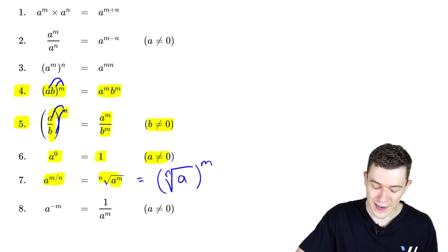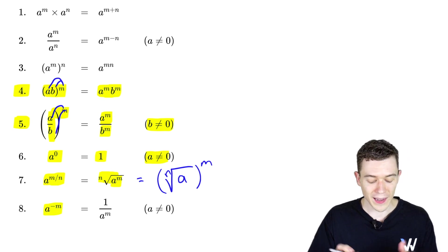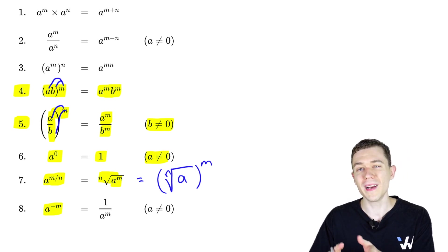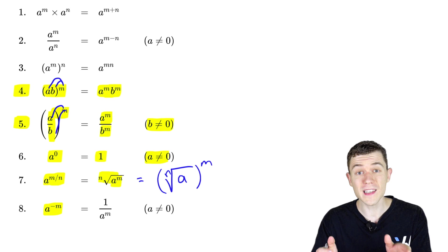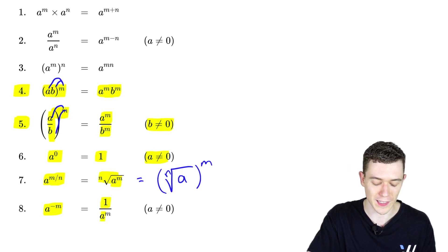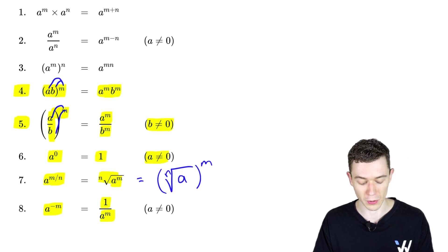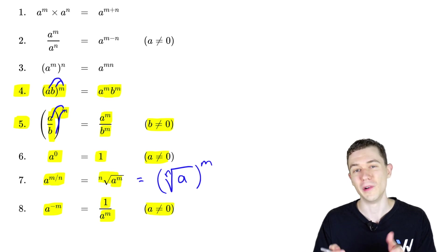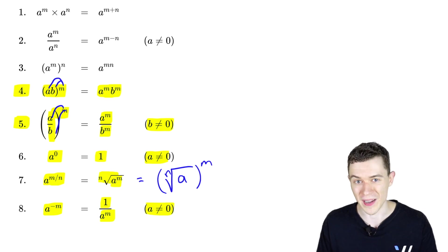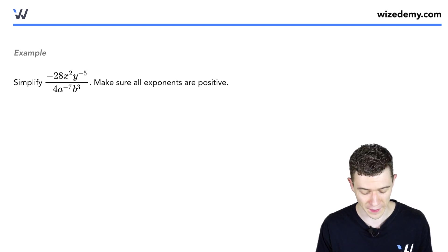Last, let's look at negative exponents. For a to the minus m, we can write any negative exponent as a positive exponent by putting it in the denominator — taking the reciprocal. Once again, a can't be zero. We can never divide by zero. Let's quickly work with these exponents in an example.